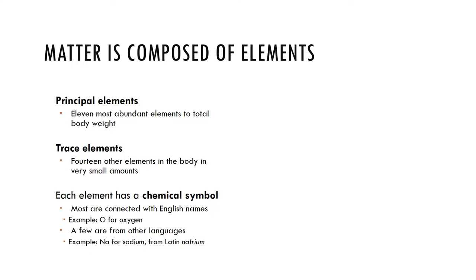Oxygen, carbon, hydrogen, and nitrogen are among the eleven principal elements most abundant in the human body. Others include calcium, phosphorus, potassium, sodium, and chlorine, to give a few examples.